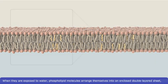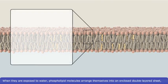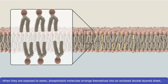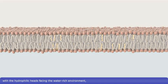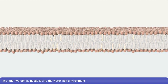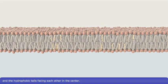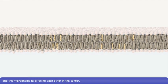When they are exposed to water, phospholipid molecules arrange themselves into an enclosed double-layered sheet, with the hydrophilic heads facing the water-rich environment and the hydrophobic tails facing each other in the center.